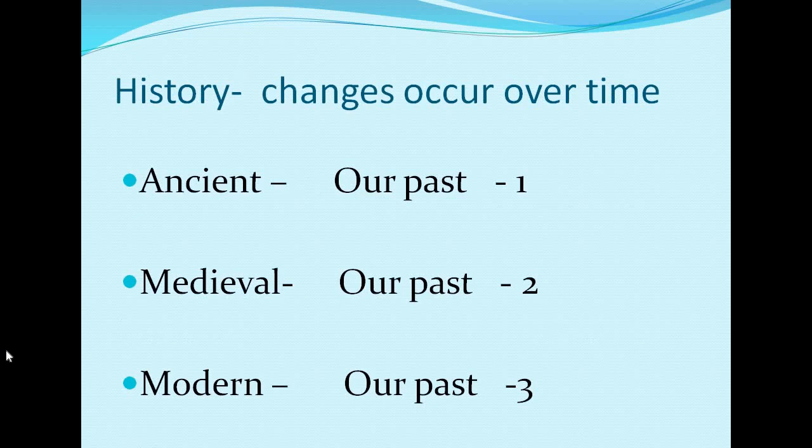Before starting the chapter, I want to give some introduction about your book. As you see on the cover of your book, it is written 'Our Pasts Part 3.' According to the curriculum, history is divided into three parts: ancient, medieval, and modern. In 6th standard you read about ancient history, in 7th standard about the medieval period, and now in 8th standard you will study the third part — the modern period.